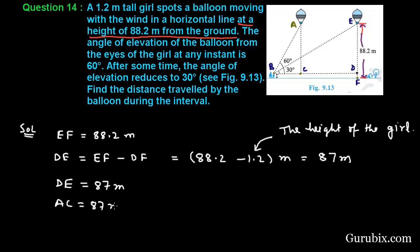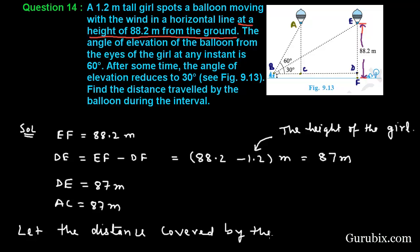Let the distance covered by the balloon be X meters, so CD equals X meters. And let BC equal Y meters.